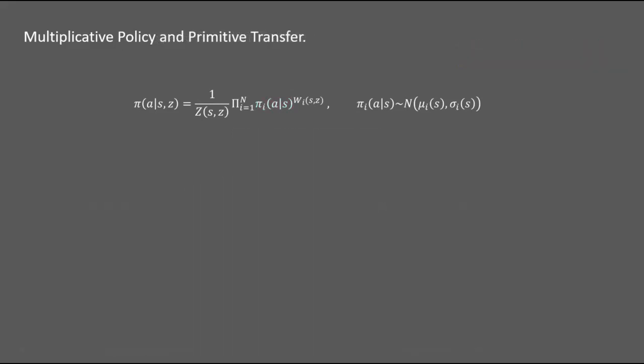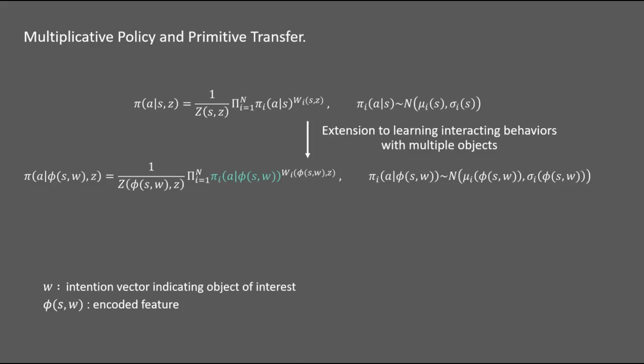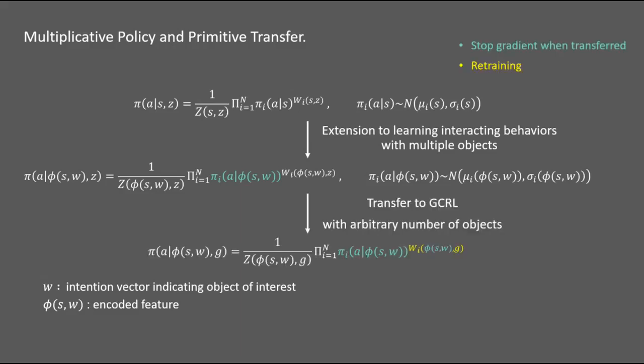If the agent can learn how to interact with an object, we can extend it into interaction with multiple object settings. As we want the agent to deal with a variable number of objects, encoded feature phi(s, omega) is used instead of state s in the original policy. Then, it is transferred to goal-conditioned RL with an arbitrary number of objects.